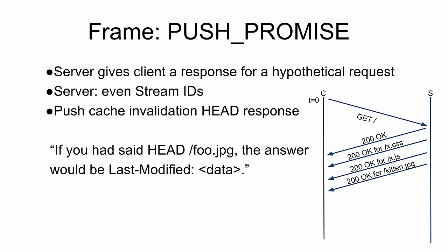Push Promise is another optional feature. This lets a server send answers to a browser that the browser didn't ask for. For instance, the browser could ask for the front page of your site, and the server might recognize that the client has an old version of the CSS or JavaScript, and the server can send a hypothetical request and a hypothetical answer. If the browser wants to use it, it can, rather than doing another full round trip.